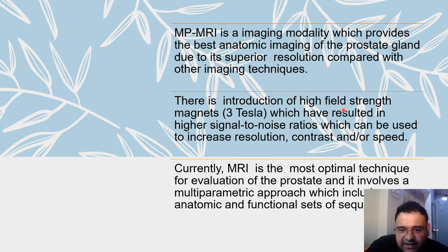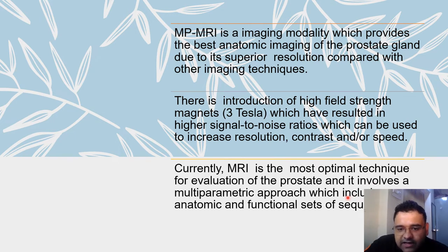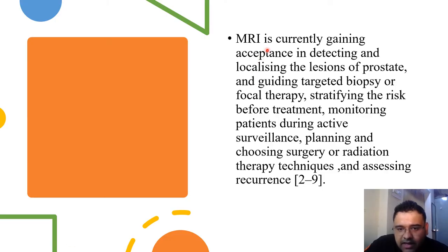With the introduction of the high field strength 3 Tesla magnet, which results in higher signal-to-noise ratio that can be used to increase resolution, contrast, or speed, MRI is currently the most optimal technique for evaluation of the prostate. Multi-parametric MRI is gaining acceptance in detecting and localizing lesions of the prostate and guiding targeted biopsy or focal therapy, stratifying risk before treatment, monitoring the patient during active surveillance, and planning surgery or radiation and assessing recurrence.